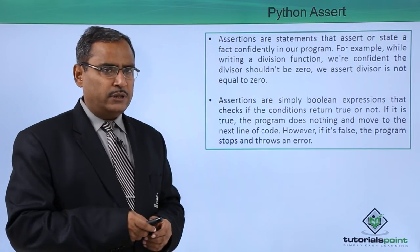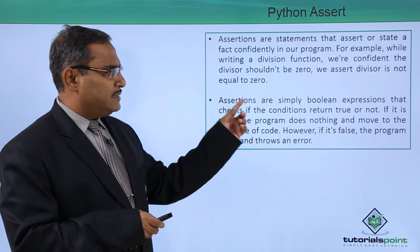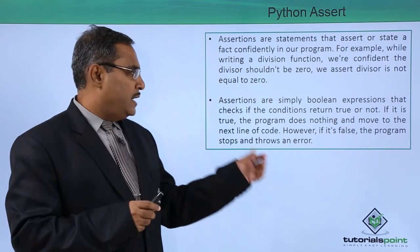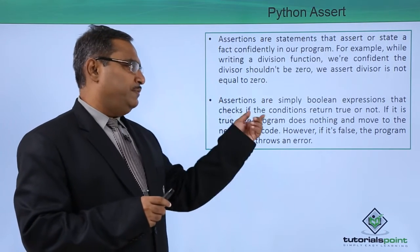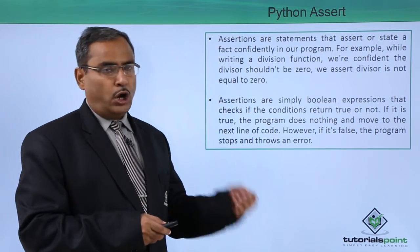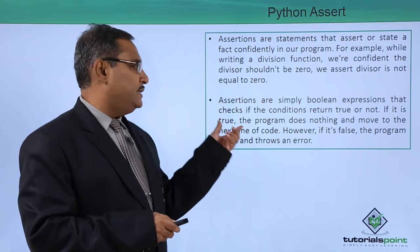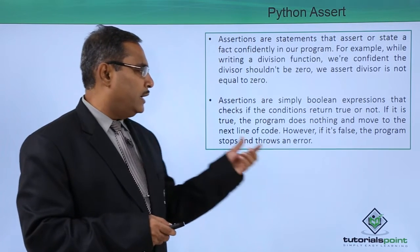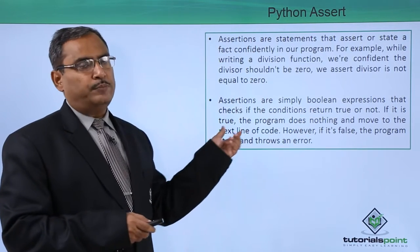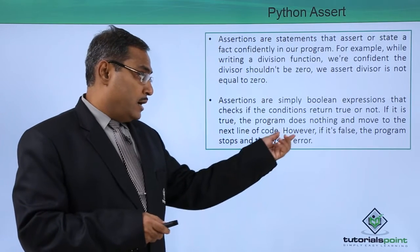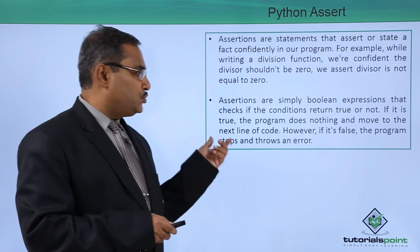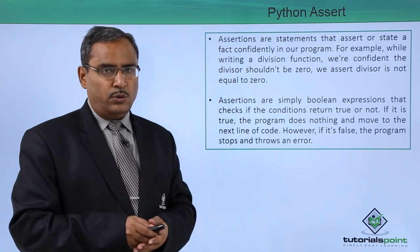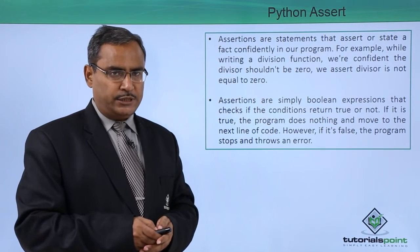Let me repeat once again for clarity. Assertions are simply Boolean expressions — they will return true or false — that check if the condition returns true or not. If it is true, the program does nothing and moves to the next line of code. However, if it is false, the program stops and throws an error. That is known as assertion in Python.